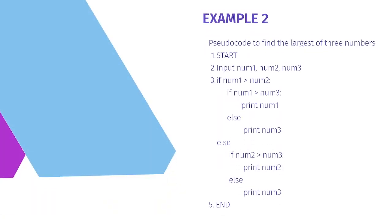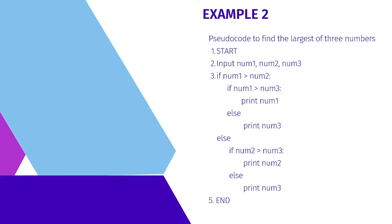As a second example, finding the largest among three numbers in pseudocode: Start, input num1, num2, num3. If num1 is greater than num2, check if num1 is greater than num3 — if true, print num1, otherwise print num3. If num1 is not greater than num2, move to the else part and check if num2 is greater than num3 — if true, print num2, otherwise print num3. That is the end of this pseudocode.